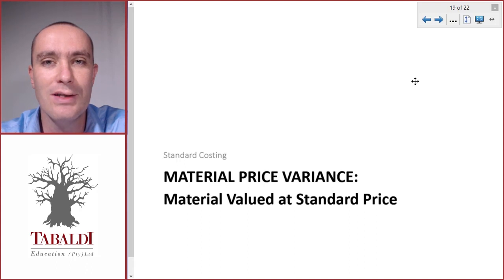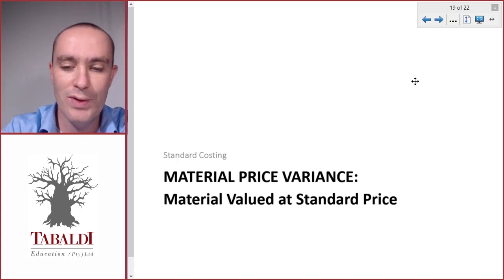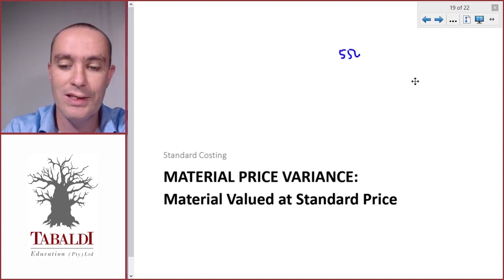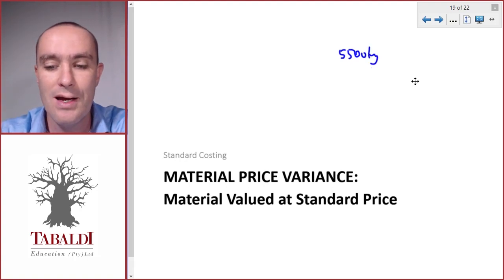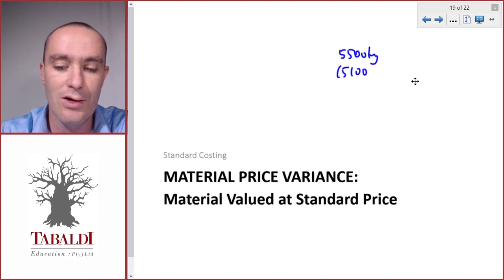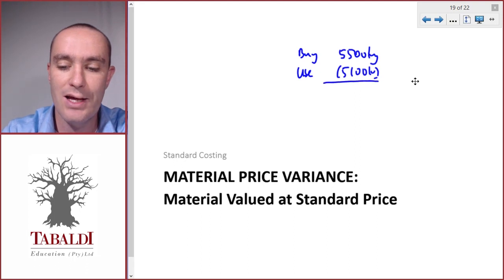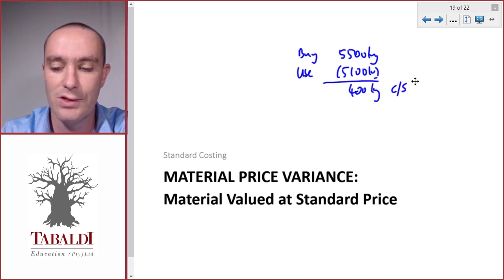Think of a situation where we purchase 5,500 kilograms of raw materials, but we only use 5,100 of it. So we buy 5,500 and we use 5,100, and we have 400 kilograms left — that's our closing inventory.